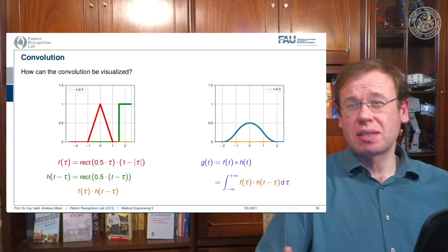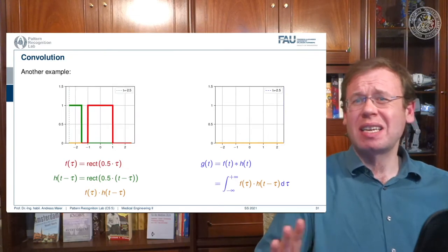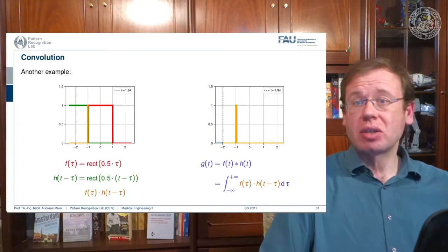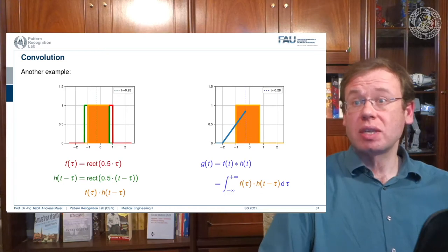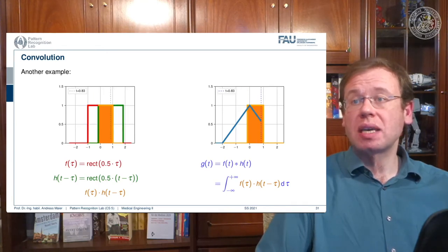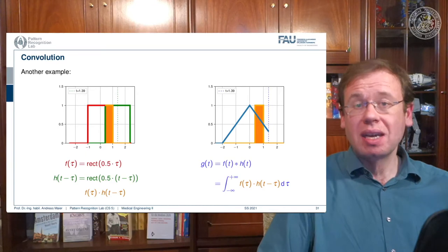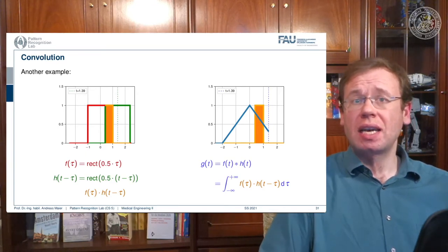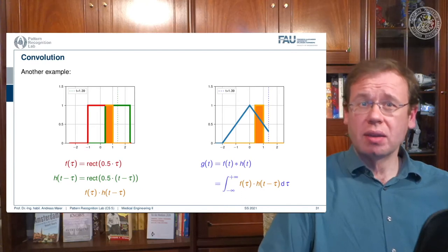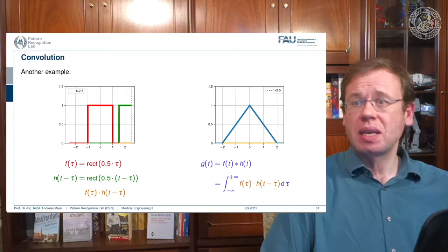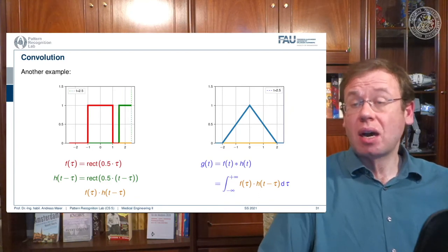Let's take a different pair of functions — this is such an interesting concept. Now I'm taking two rectangular functions. Shifting the green curve, they start touching and I start getting values. As I shift, there's a linear increase, so I get this line. Then the overlap is reduced and it's linearly decreasing again. So if I convolve two rectangular functions with each other, I get a triangular function. And if I convolve a triangular function with a rectangular function, I get a bell-shaped function.